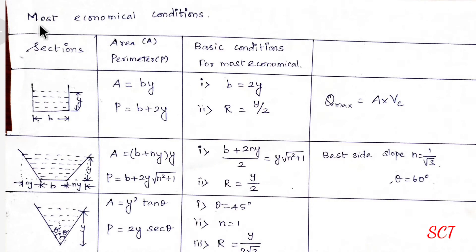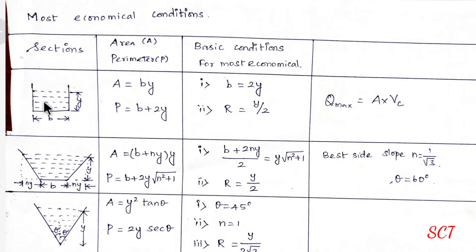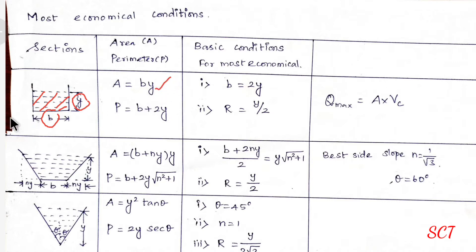First, most economical sections conditions. We will see the rectangular section. In the rectangular section, depth y, breadth B. The wetted area is breadth into depth: B into y. The perimeter is b plus 2y. That is the perimeter formula.